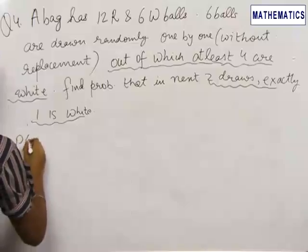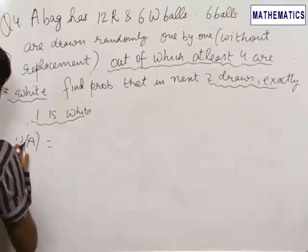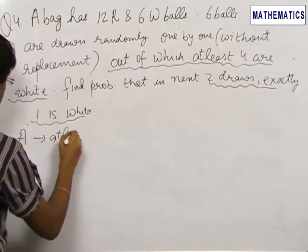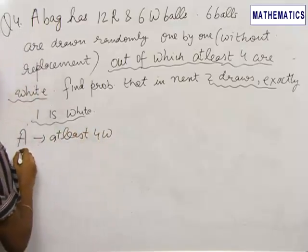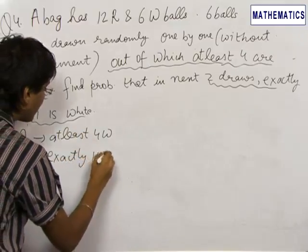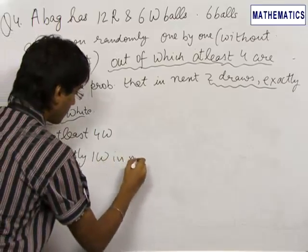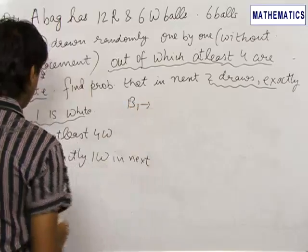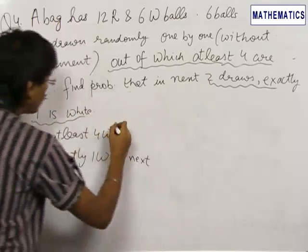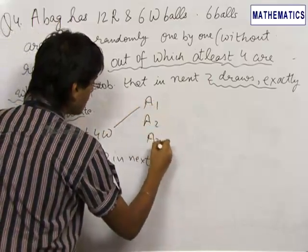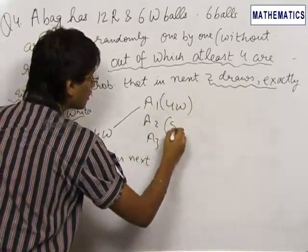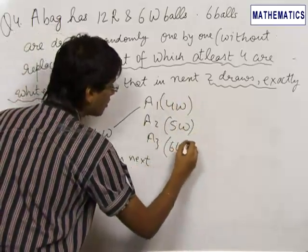Let event A be: at least 4 white balls drawn. Let event B be: exactly one white ball in the next 2 draws. Event A can be split into 3 parts — A1, A2, and A3 — where A1 represents exactly 4 white balls out of 6, A2 represents 5 white balls out of 6, and A3 represents all 6 balls being white.